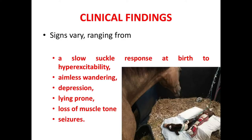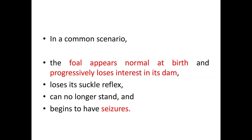Now let's see the clinical findings of Neonatal Maladjustment Syndrome. Signs vary ranging from a slow suckle response at birth to hyper excitability. Then there will be aimless wandering, depression, lying prone, loss of muscle tone, and seizures. In a common scenario, the fall appears normal at birth and progressively loses interest in its dam, loses its sacral reflex, can no longer stand, and begins to have seizures.